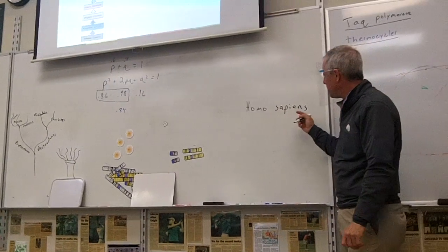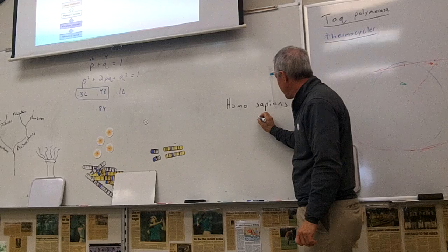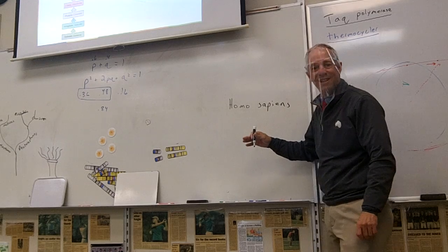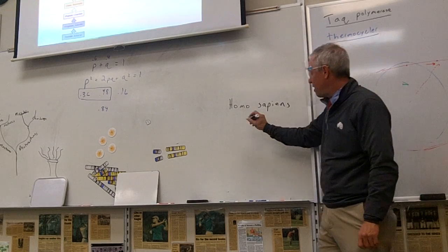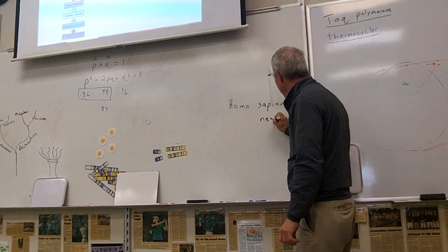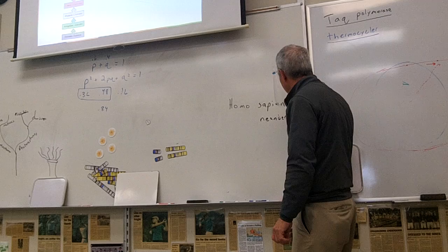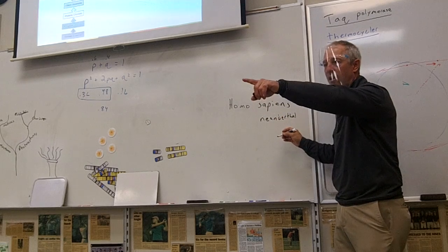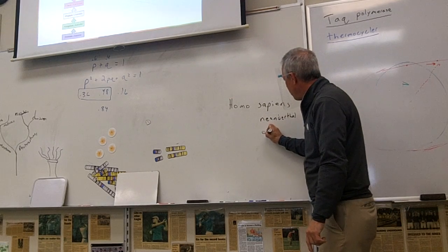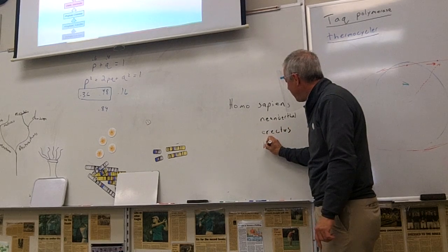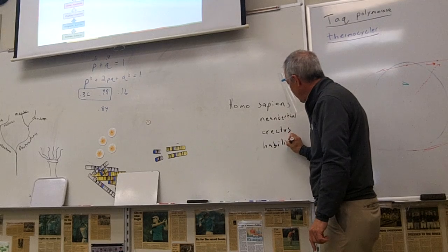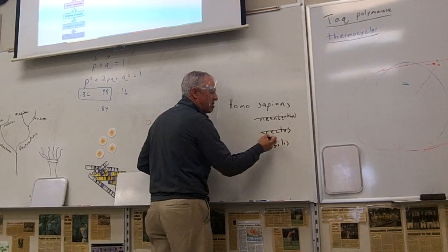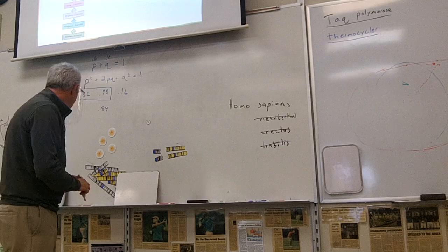Do you know any other Homo species besides Homo sapiens? Australopithecus is actually genus Australopithecus, not Homo. Neanderthal is Homo neanderthalensis. There's also Homo erectus and Homo habilis. There's a whole bunch of different Homo species — those all went extinct and we're the only ones that survived.